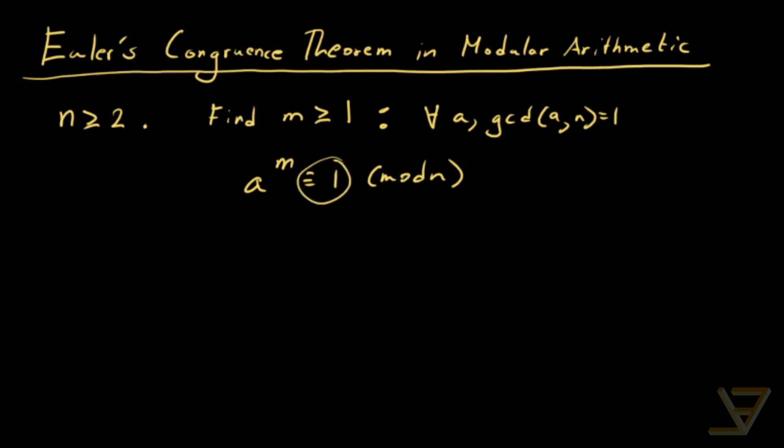This congruence to 1 mod n is very useful because if m is greater than or equal to 2, which in most cases it will be as we'll see, then a times a to the power of m minus 1 is congruent to 1 mod n.